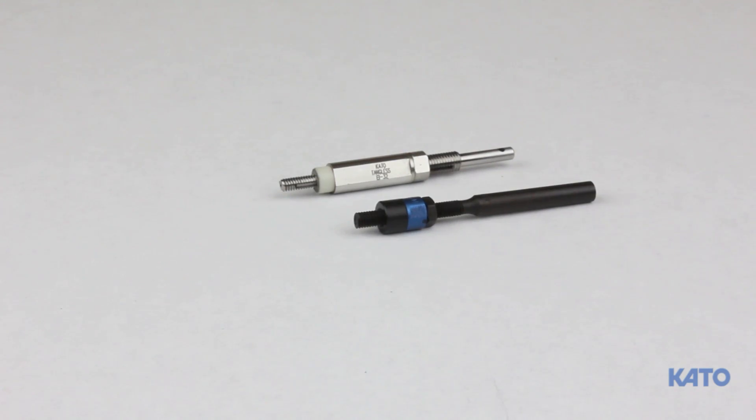The final component is the installation mandrel assembly. This is the part you'll swap out for insert type and different thread sizes. The Kato Round electric tool can install both tangless and tanged inserts.